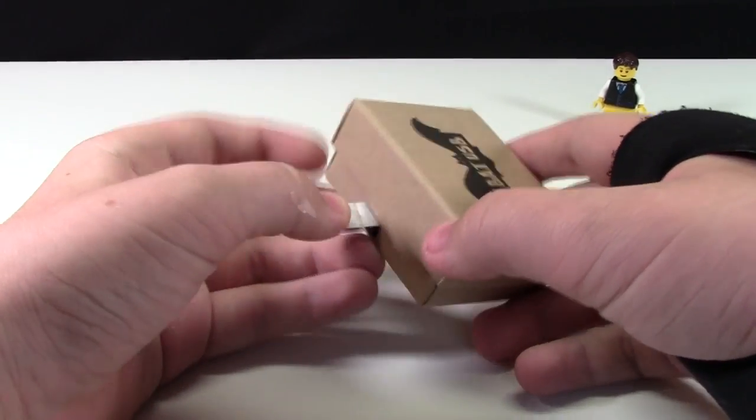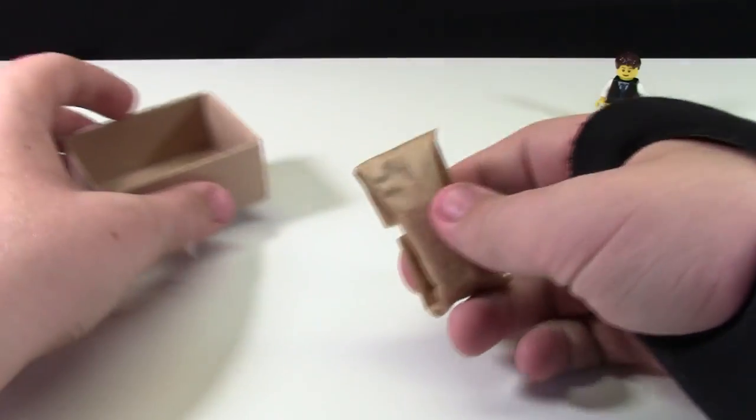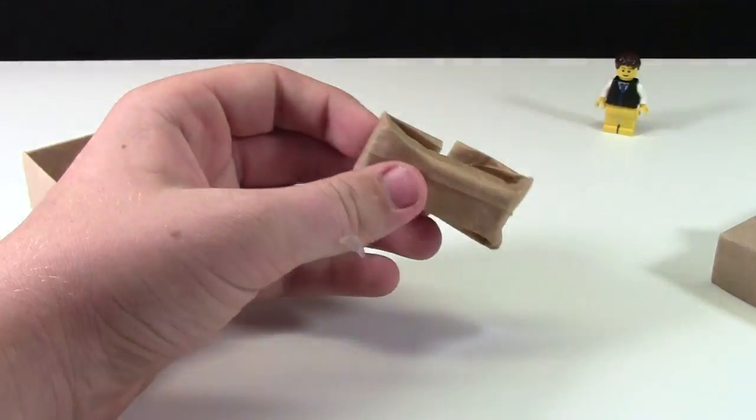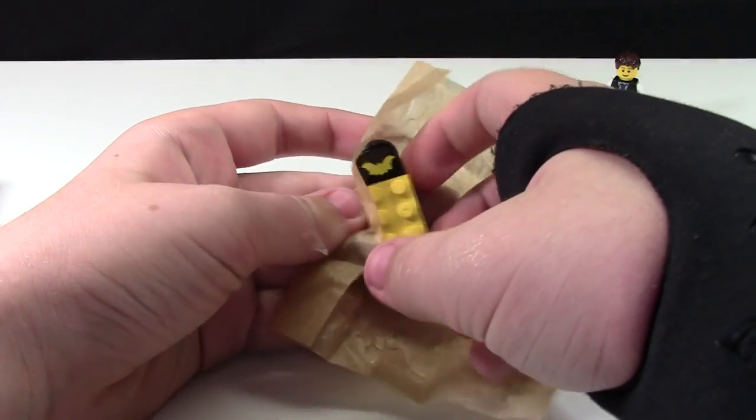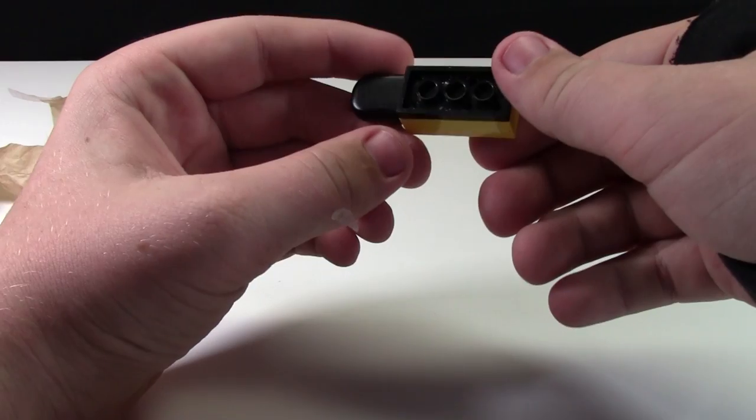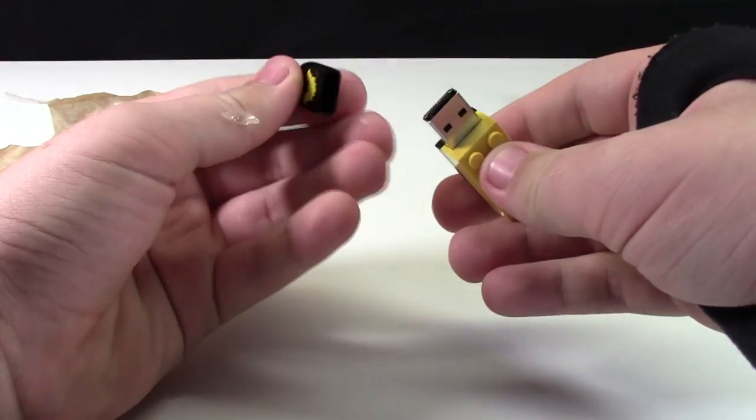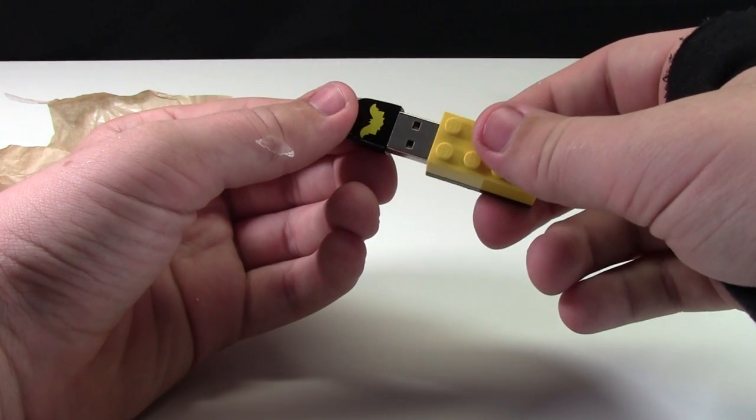Here we'll open up the last of the USB drives, the second one that I got. Here's the USB drive. It is a 2x4 yellow brick with a black plate here and the little bat logo. The bat logo is just a cover to keep the USB drive safe.